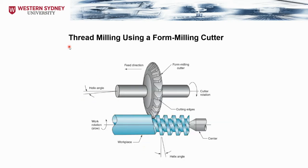Thread milling can be done using form milling cutters. The shape of the cut will be a reverse of the cutting tool shape. The part is fixed on an indexing table and rotated while the cutting tool rotates and is fed in the direction of cut, resulting in the thread milling operation.